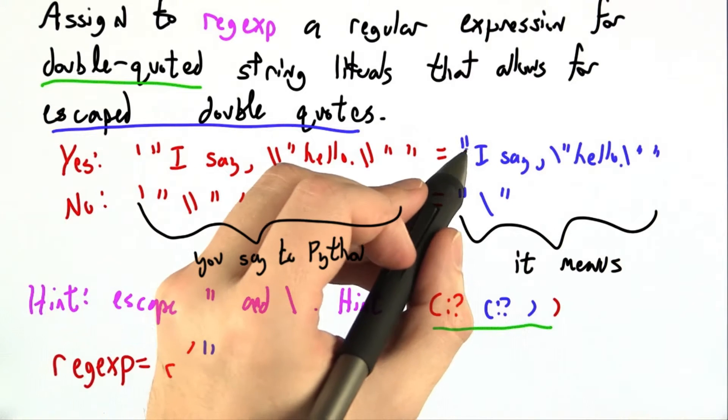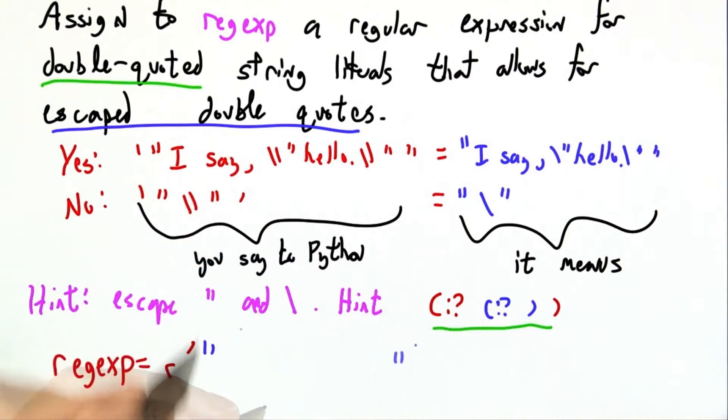Then we want to match the blue double quote here at the beginning, and somewhere way at the end we'll want to match the closing one, and that'll be the end of our regular expression. So now we just have to think of what goes in here in the middle. And this may not be enough room. I may have to erase it and write it again.